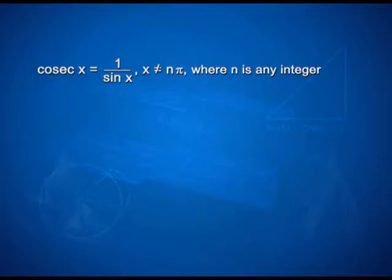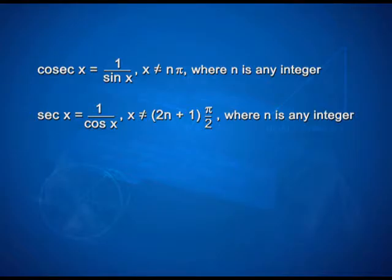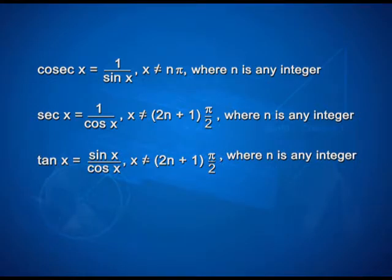We now define other trigonometric functions in terms of sine and cosine functions. Cosec x = 1/sin x, where x ≠ nπ and n is any integer. Sec x = 1/cos x, where x ≠ (2n+1)π/2 and n is any integer. Tan x = sin x / cos x, where x ≠ (2n+1)π/2 and n is any integer.